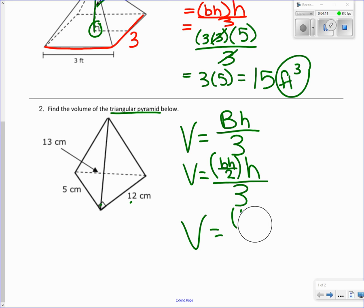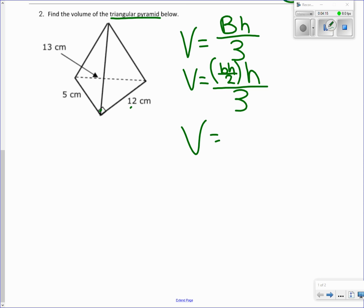So we're going to put in—I'm doing this part up here—12 times 5 divided by 2, and then the height is 13.